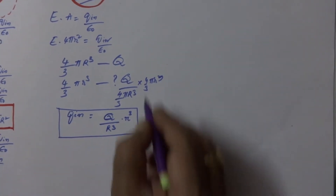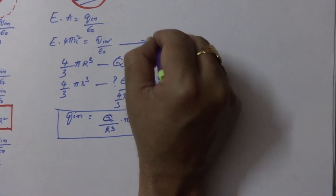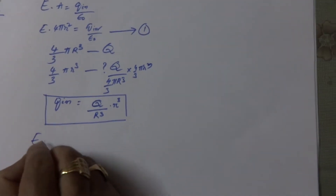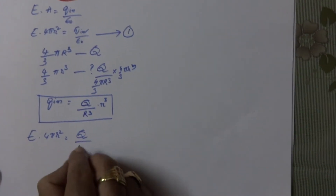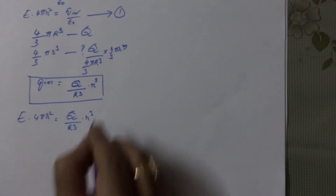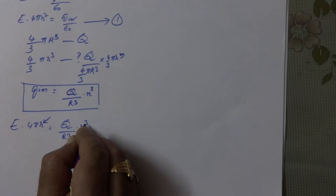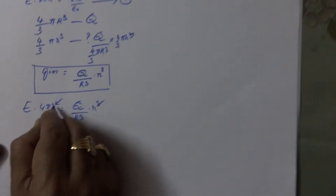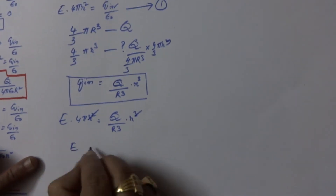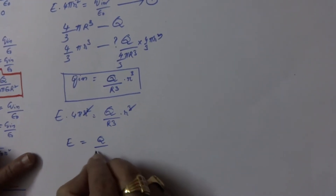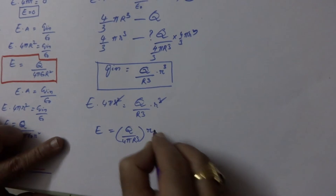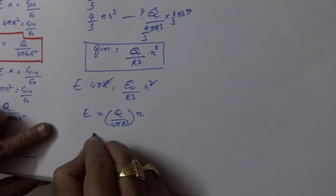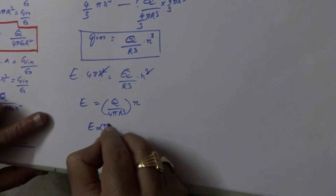Now let us replace this value of Q_in in the equation. So E times 4πr² equals Q·r³ divided by R³ times 1/ε₀. Cancelling one r² from both sides, only one r is left. Therefore E equals Q by 4πε₀R³ times r. Since Q is constant, E is directly proportional to r inside the solid sphere.